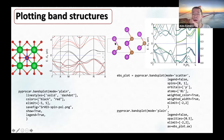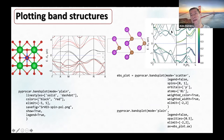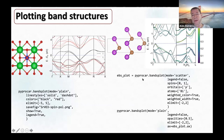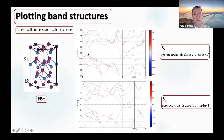We can also change the plotting method. We can use a scatter plot, changing the symbol size by adding the intensity of the contribution of whatever you are trying to plot—such as different orbitals or spin type. I prefer colors myself, but I think scatter plots are useful for users.